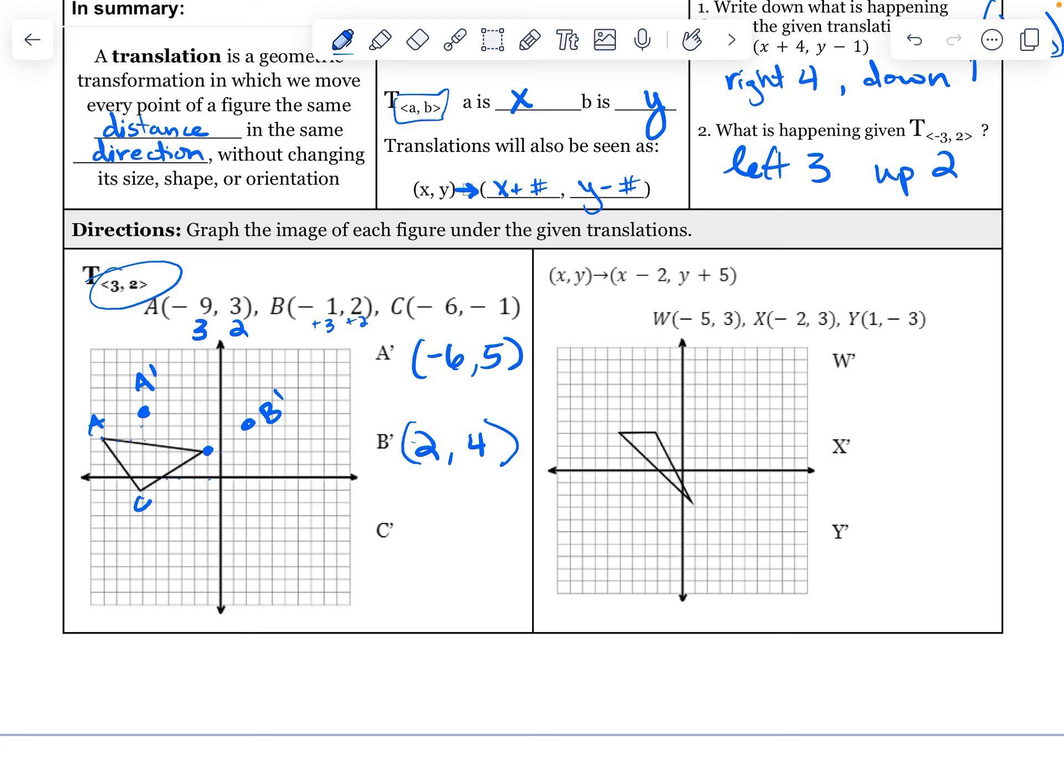And C should end up at negative 3, positive 1. Over 1, 2, 3, up 1, 2. Gorgeous. C prime. And my new shape is the exact same triangle. It has just been scooted over 3, up 2. Marvelous, my dears.